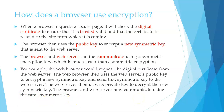To summarize: using asymmetric encryption, the web server has a public key that the browser can access. The browser uses that public key to encrypt its own symmetric key, because symmetric encryption is faster. It then sends that encrypted symmetric key over the network to the web server, which uses its own private key to decrypt it.